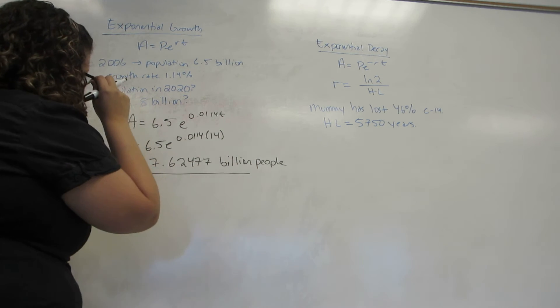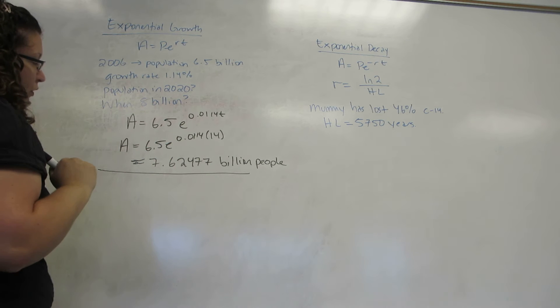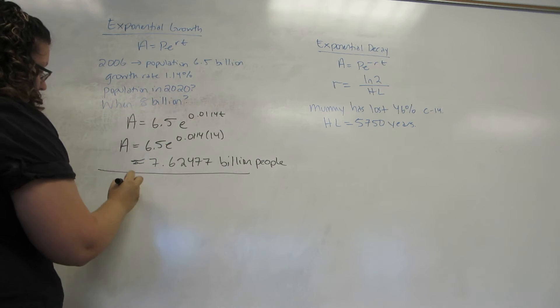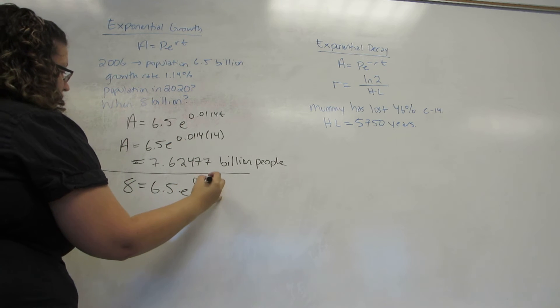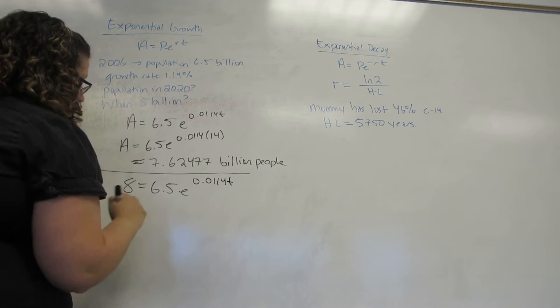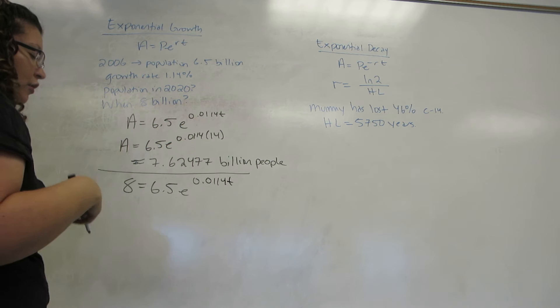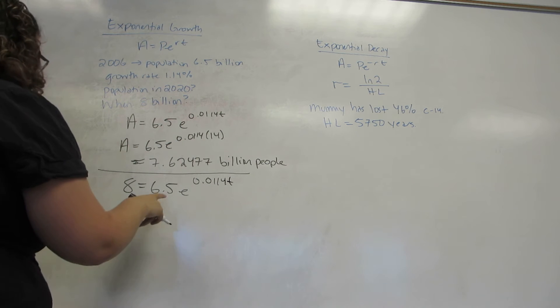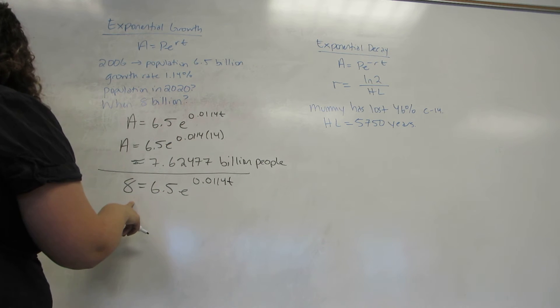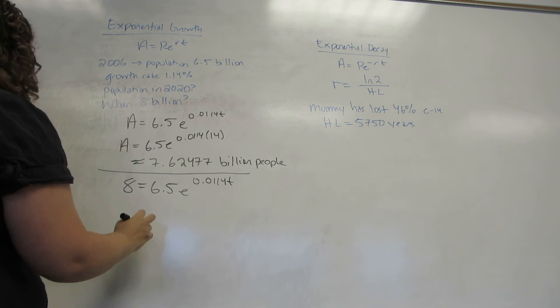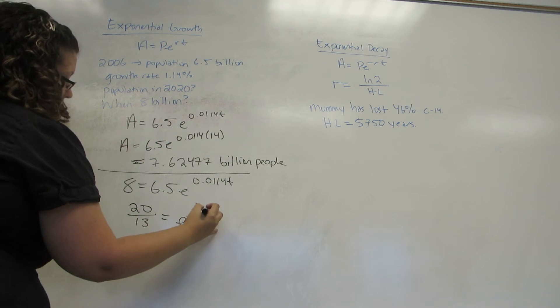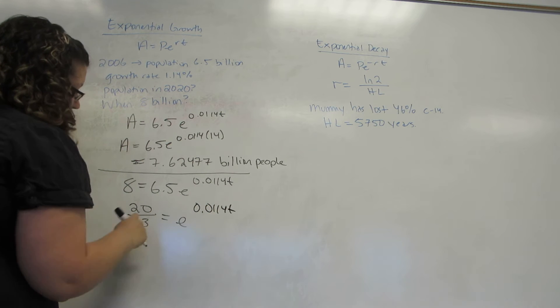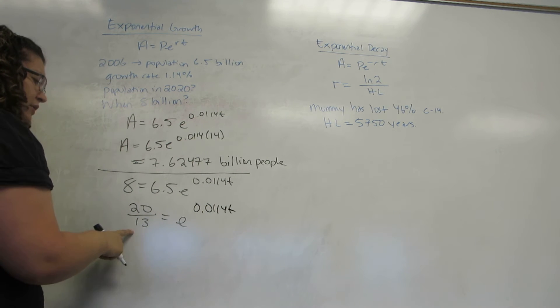For the second problem, we want to estimate when the population will reach 8 billion. So, we're going to plug in 8 for A and solve for T. So, just like before, we want to get the exponential alone. So, I'm going to divide both sides by 6.5.